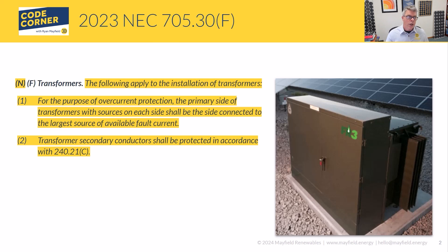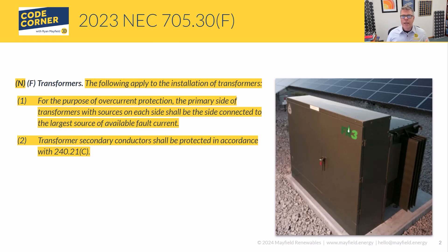Number one talks about the primary and secondary side of the transformers. This is important because we often get associations of primary and secondary with voltage levels. In a traditional commercial/industrial installation, the utility might come in at 480V and we need single-phase loads at 120V. So we take a transformer and step 277/480V down to 120/208V for the loads. In that case, the primary is the 480 side, the secondary is the 120/208 side.